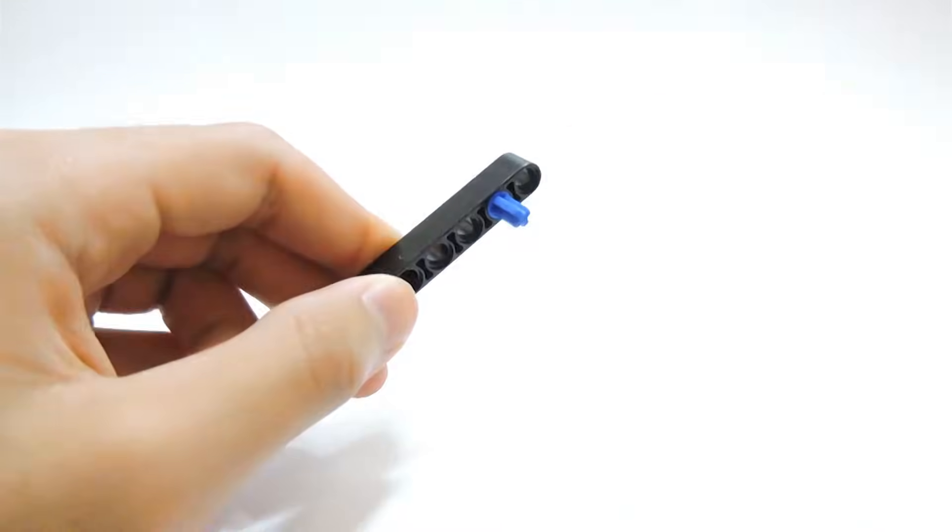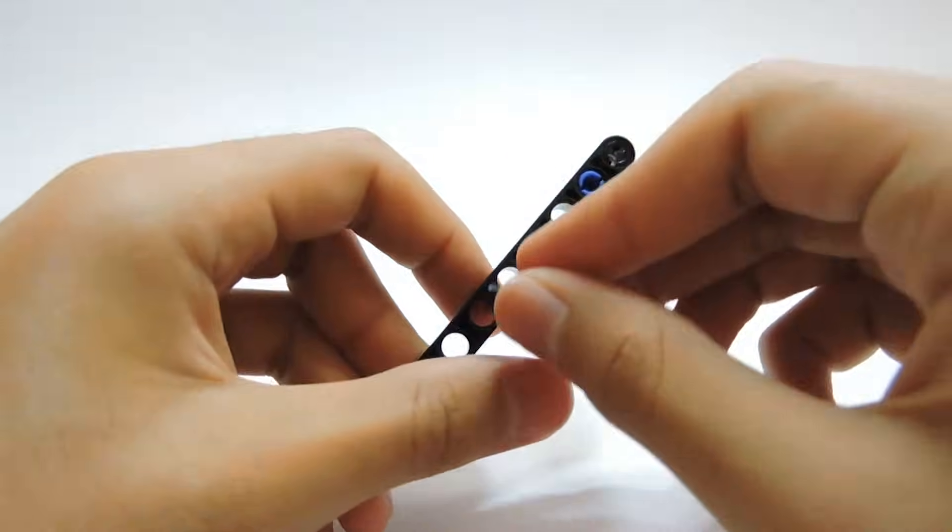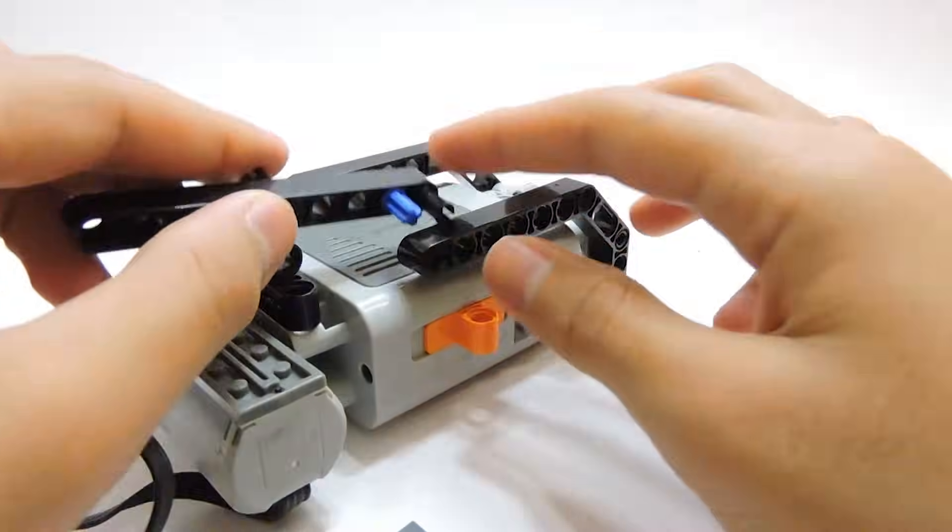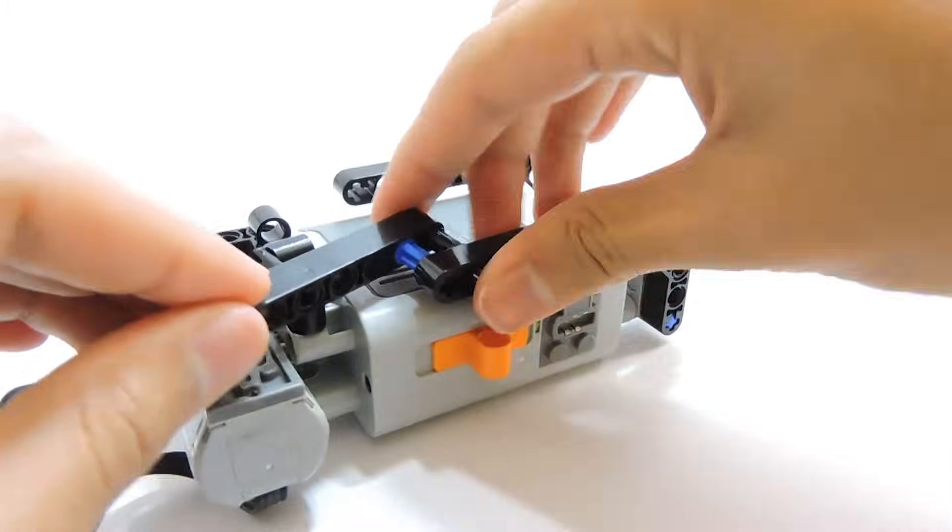Once you're done with that, take a nine sized beam and attach some connectors to it like that and attach it to our assembly. Now do the same with the other side.